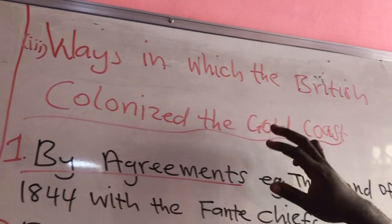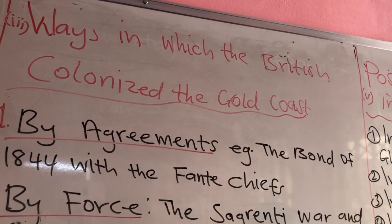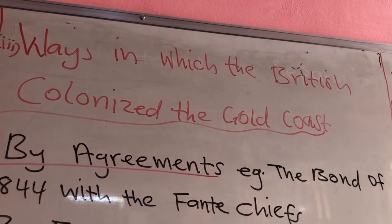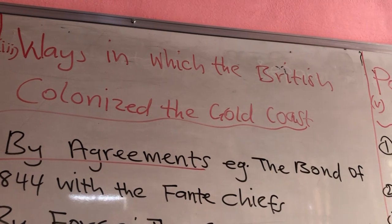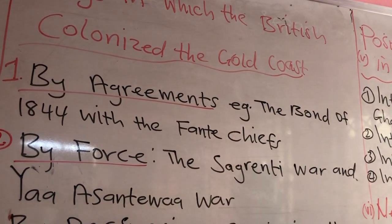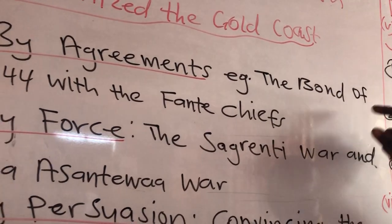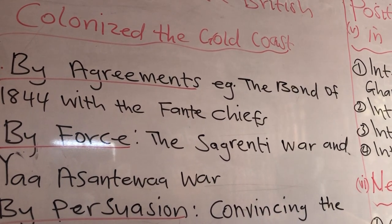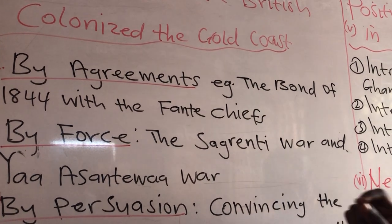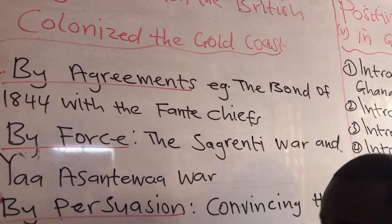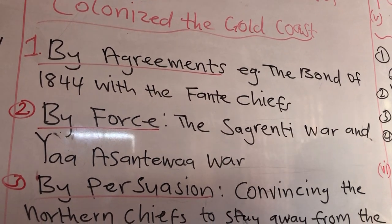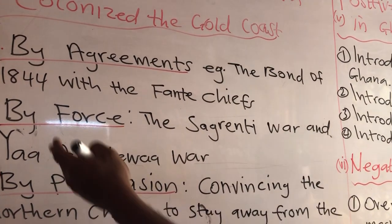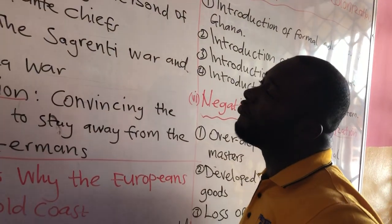Let's go to the ways in which the British colonized the Gold Coast. Before they were able to colonize it, they used three main ways. One of the ways was by agreement. An example was the signing of the Bond of 1844 with the Fante chiefs. Because the British wanted to colonize the Gold Coast, they intentionally signed agreements with the Fante chiefs, who were at the coastal line in the southern states. They signed a peace agreement — the Bond of 1844 — which is a different topic we will discuss in the next lesson.